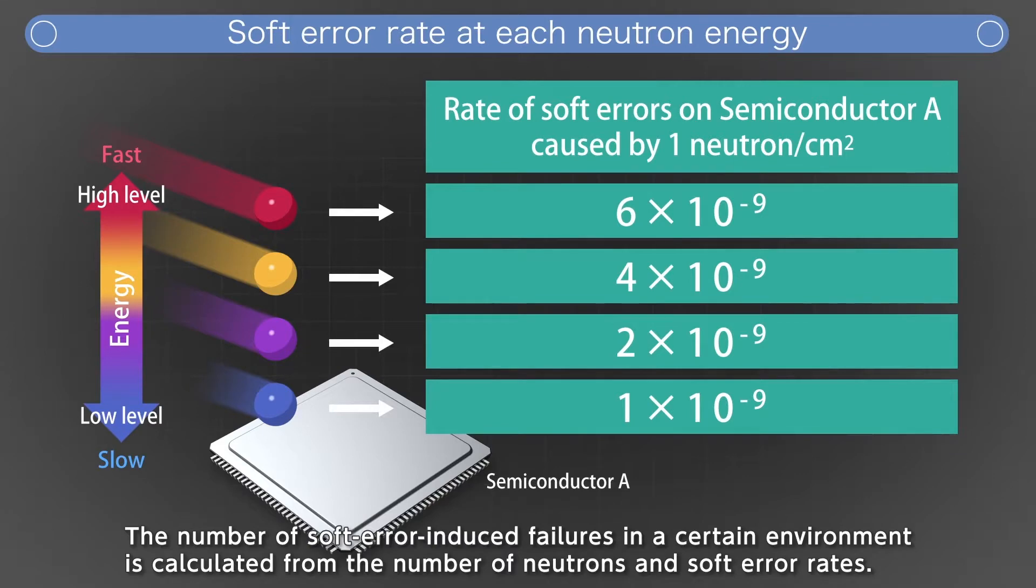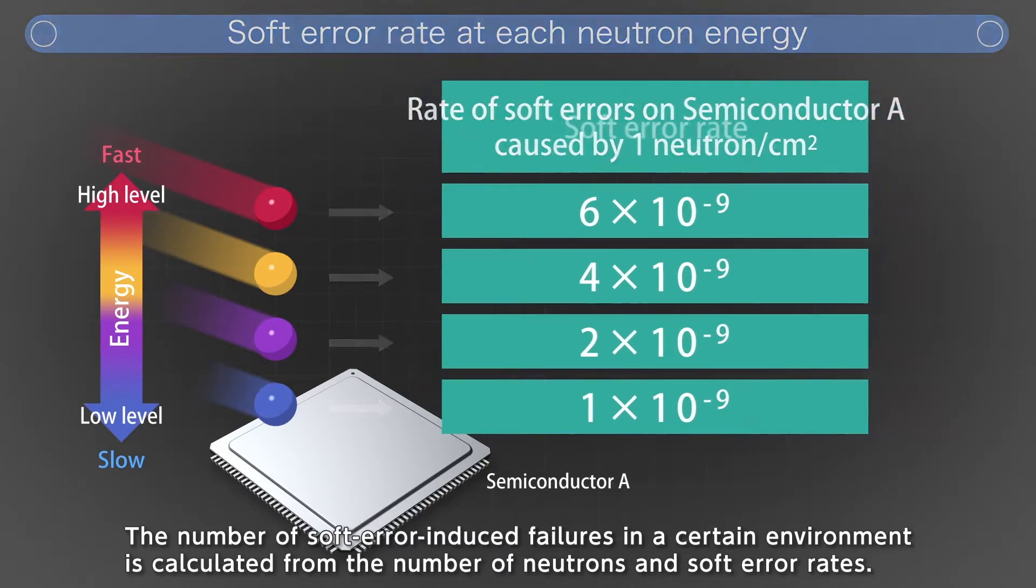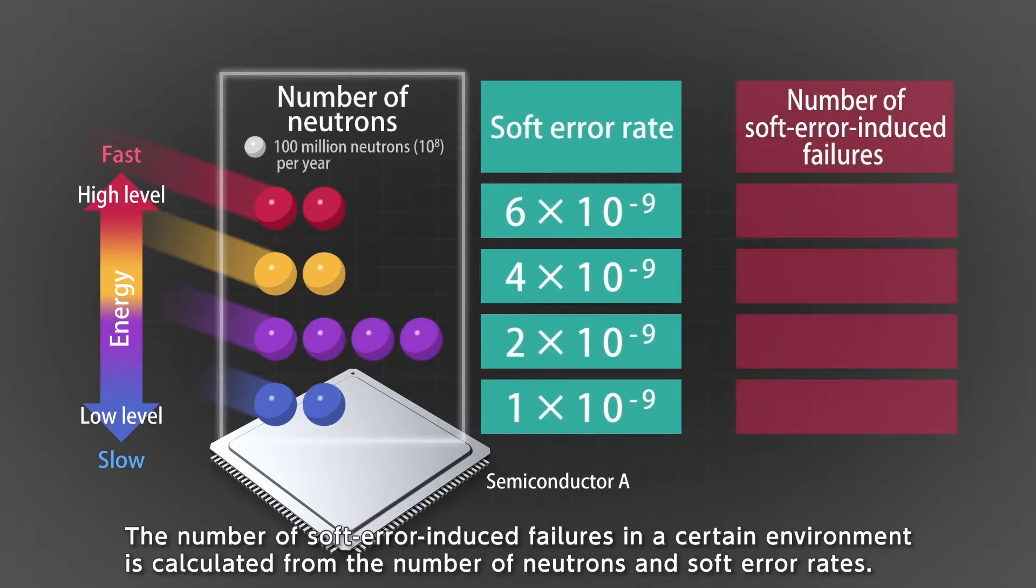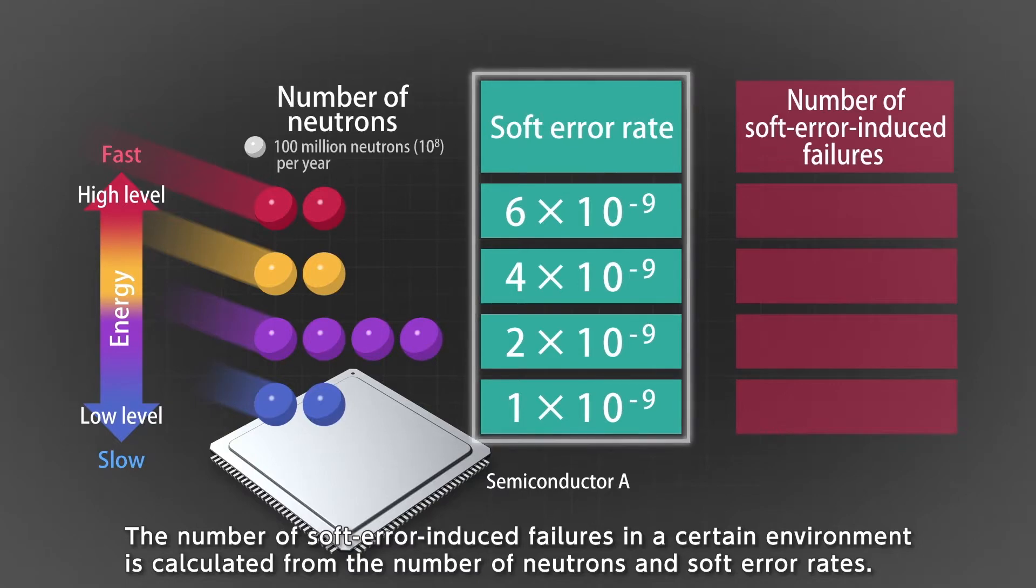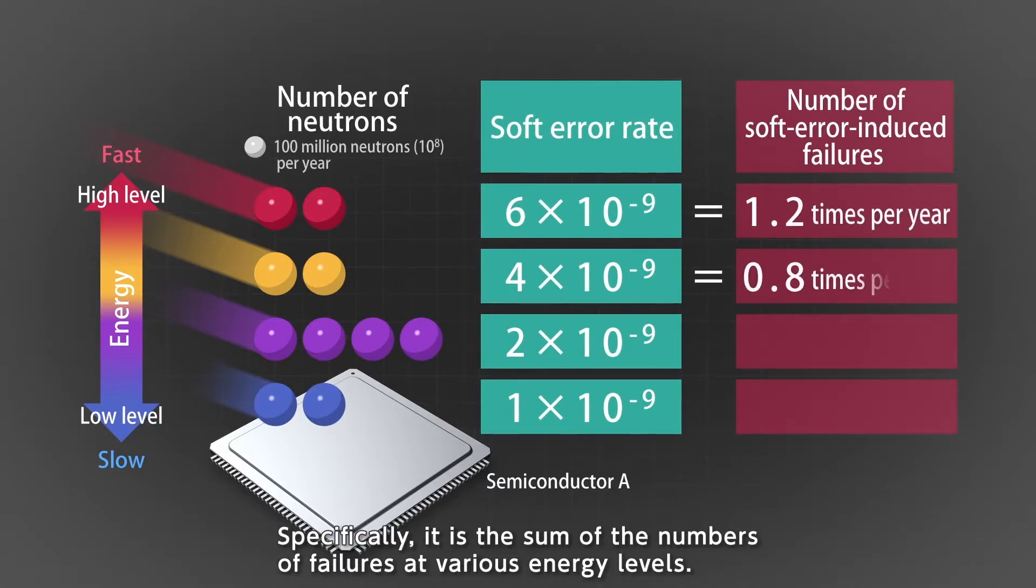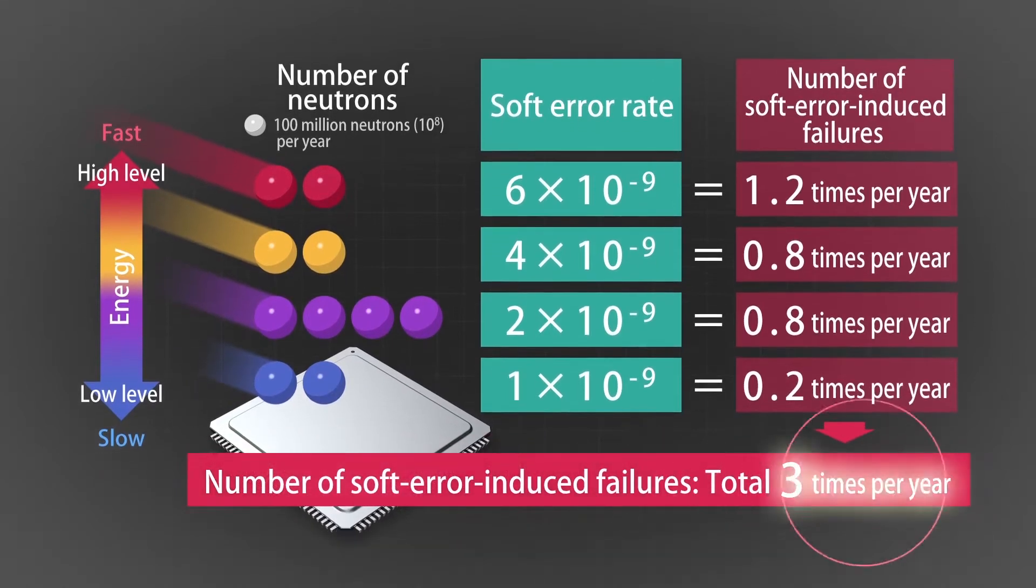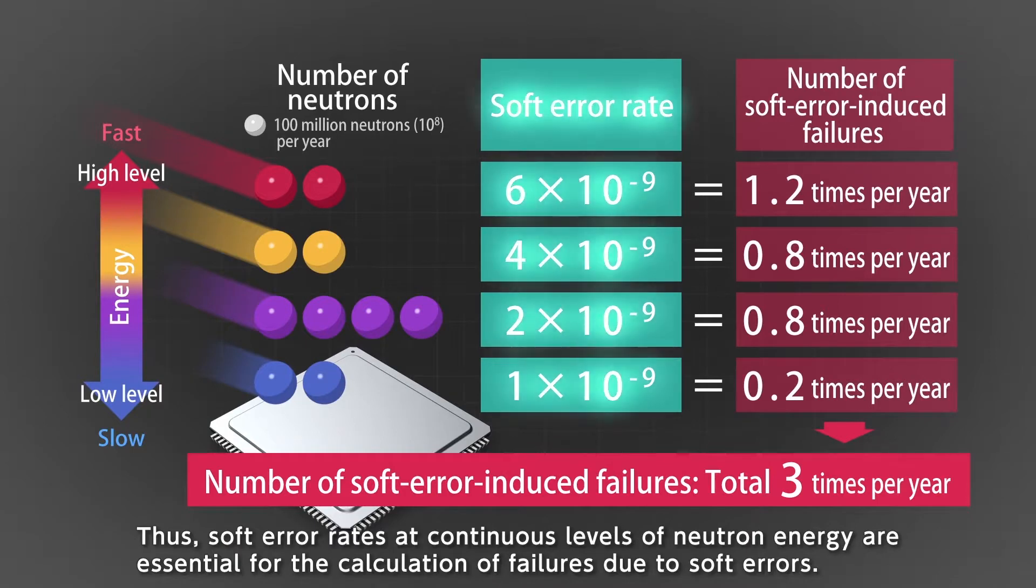The number of soft error-induced failures in a certain environment is calculated from the number of neutrons and soft error rates. Specifically, it is the sum of the numbers of failures at various energy levels. Thus, soft error rates at continuous levels of neutron energy are essential for the calculation of failures due to soft errors.